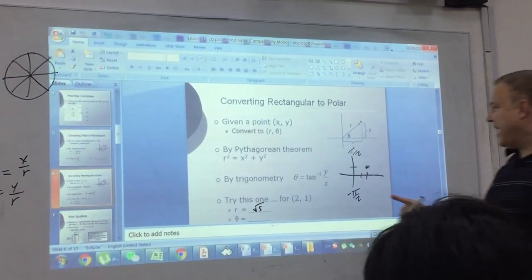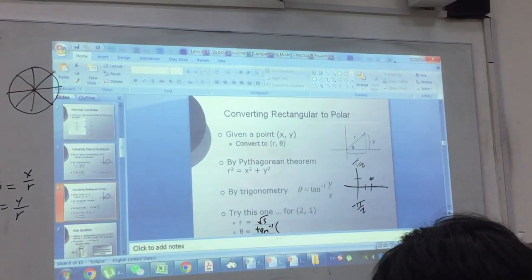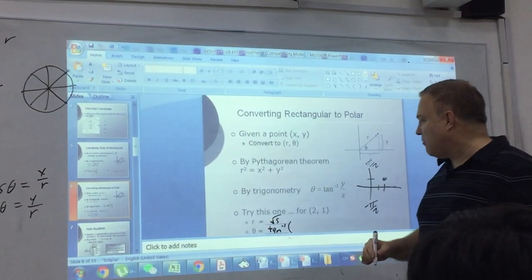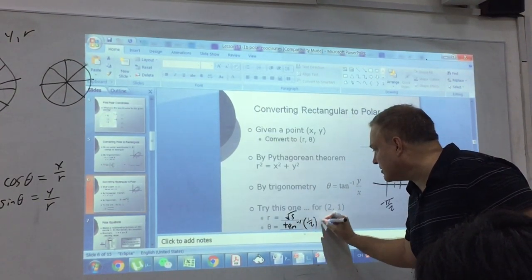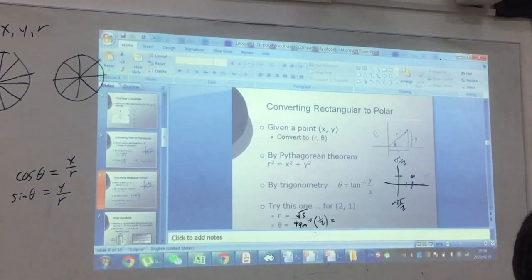And for the angle, we're just going to take the inverse tangent of y over x. So what's y over x? 1 over 2. And we can just do that in the calculator. Let me show you that real quick.